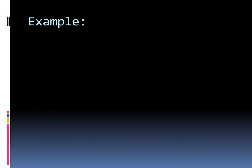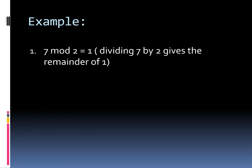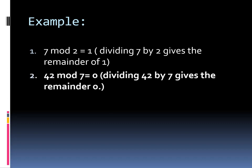First example: 7 mod 2 equals 1. Dividing 7 by 2 gives a remainder of 1. Here 7 is our A and 2 is our B, because A must be greater than B. Another example: 42 mod 7 equals 0. Here 42 is our A, 7 is our B, and 0 is our remainder R. Dividing 42 by 7 gives remainder 0.